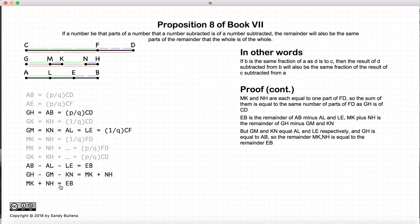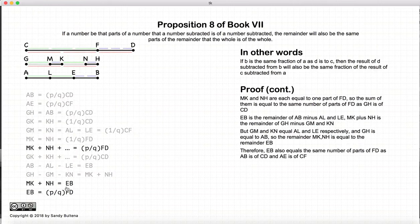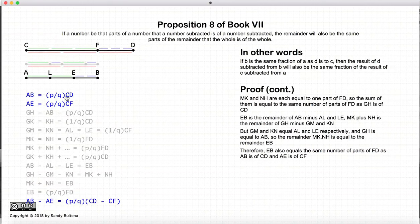So, EB is equal to MK plus NH. Now, we have that MK plus NH is a fraction of FD, and EB is the same fraction of FD, because they're equal. So, EB is equal to AB minus AE, FD is equal to CD minus CF, so I've just rewritten this equation in the longer form. We started that AB is some fraction of CD, or fractions of CD, and AE is the same fractions of CF. AB minus AE is equal to the same fractions of CD minus CF. And that is what we set out to demonstrate.